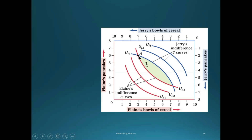Point A falls on indifference curve UJ3 for Jerry and UE3 for Elaine. The question is whether allocation A is exchange efficient — and we can see that it is not. Tracing Elaine's indifference curve, point C relative to a point on that curve involves Elaine getting more of both goods. By the more-is-better assumption, point C is preferred to any point on Elaine's indifference curve through A. Hence, for Elaine, allocation C is preferred to allocation A.